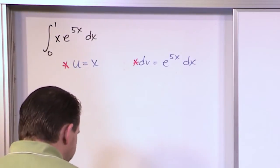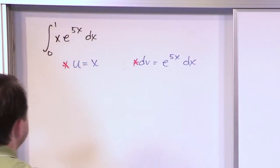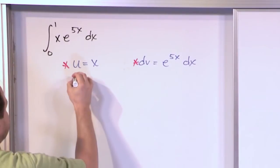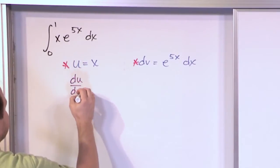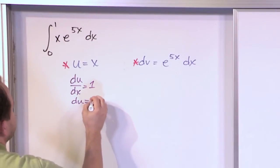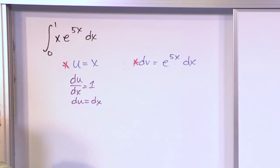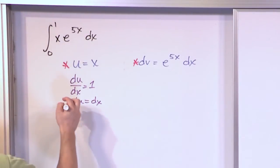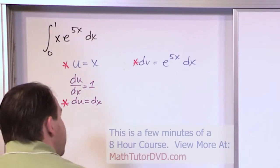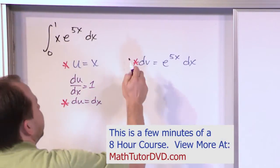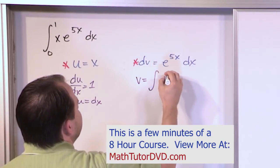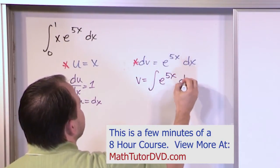We already have two pieces of information required to do integration by parts, and now we need to use them to calculate the other two pieces. For u = x, du/dx is just 1, so du = dx. And then to find v, we say v is the integral of e^(5x) dx.